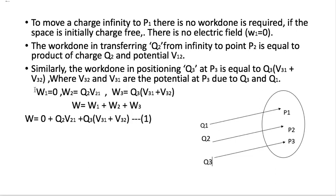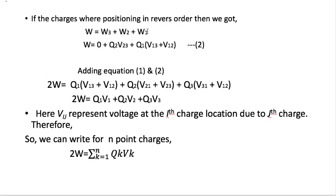By this we get three work done values. The total work done is equal to q2·v21 plus q3 times (v31 plus v32). If the charges were positioned in reverse order — first q3 to p3 and lastly q1 to p1 — then the total work done equals q2·v23 plus q1 times (v13 plus v12).